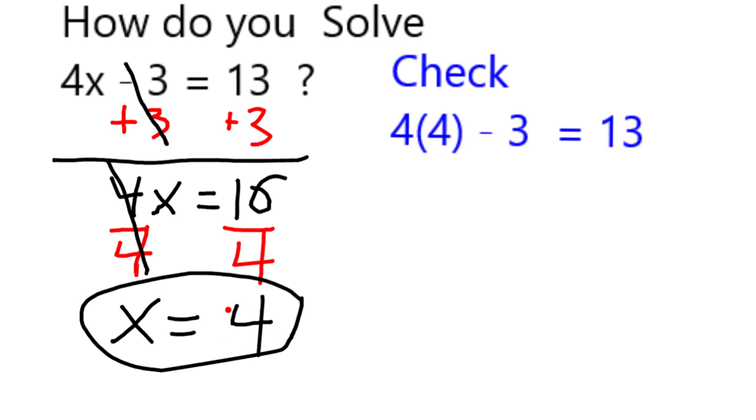Now I'm just going to do a quick check by taking a 4 and plugging it into the original equation, in which case I'm going to get 4 times 4, which is 16. And 16 minus 3 is in fact equal to 13.